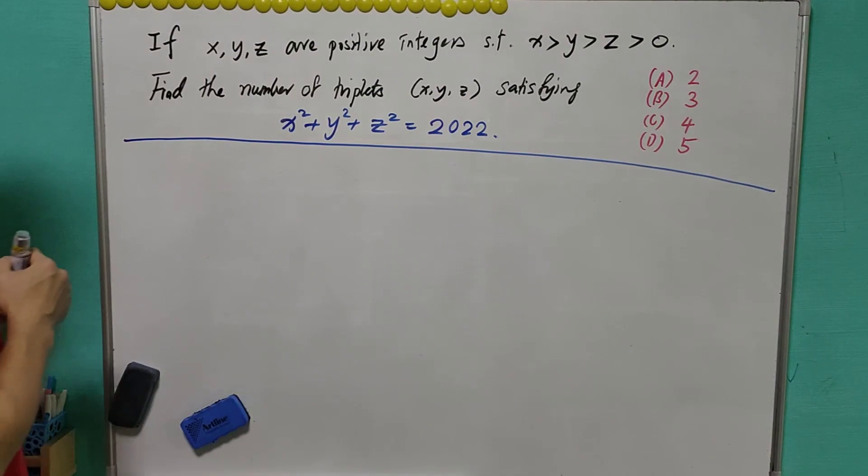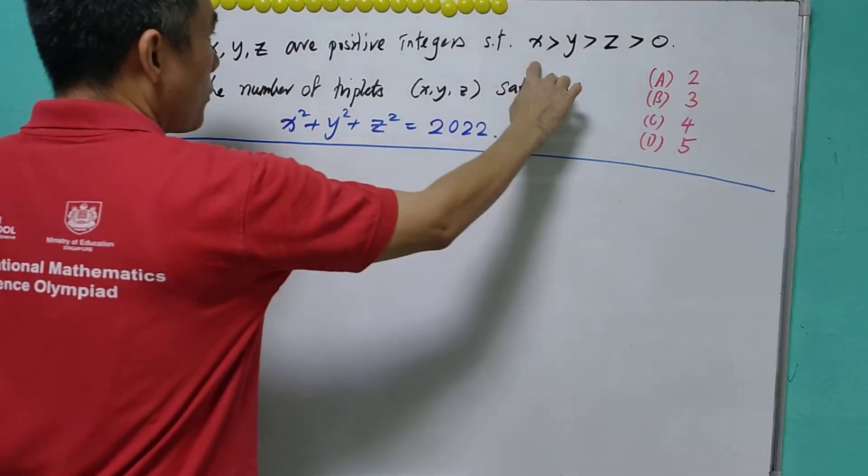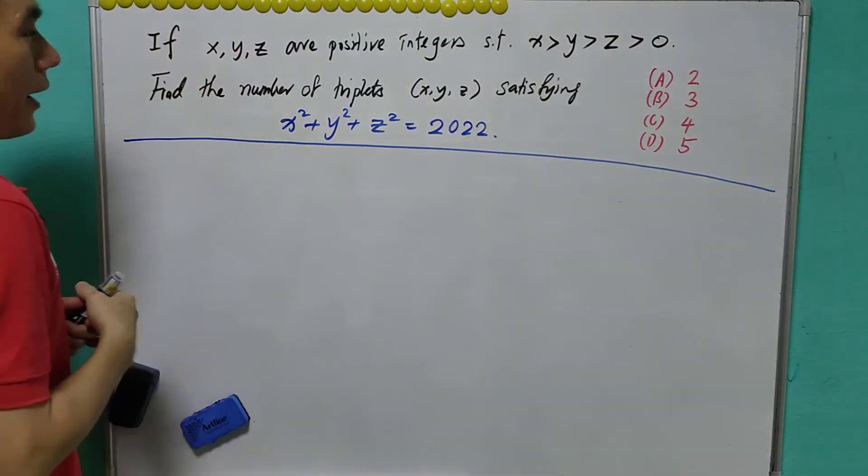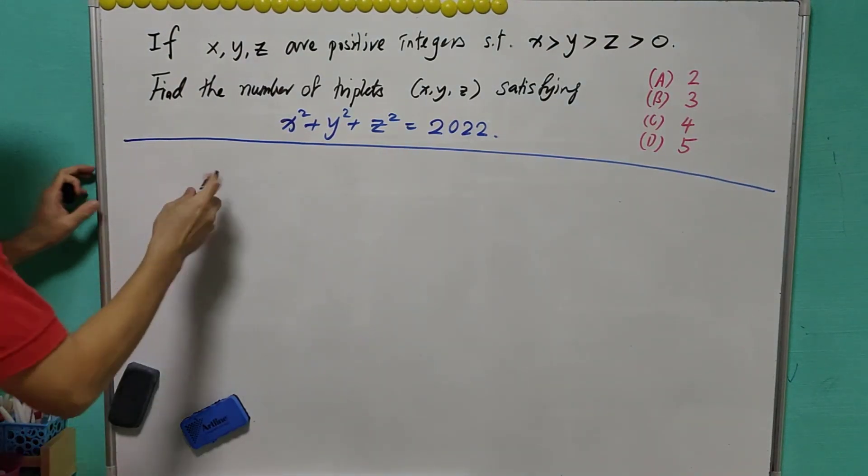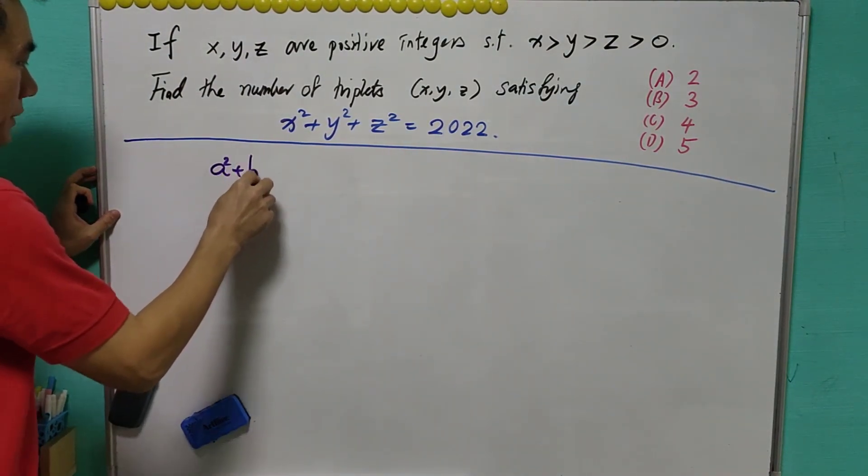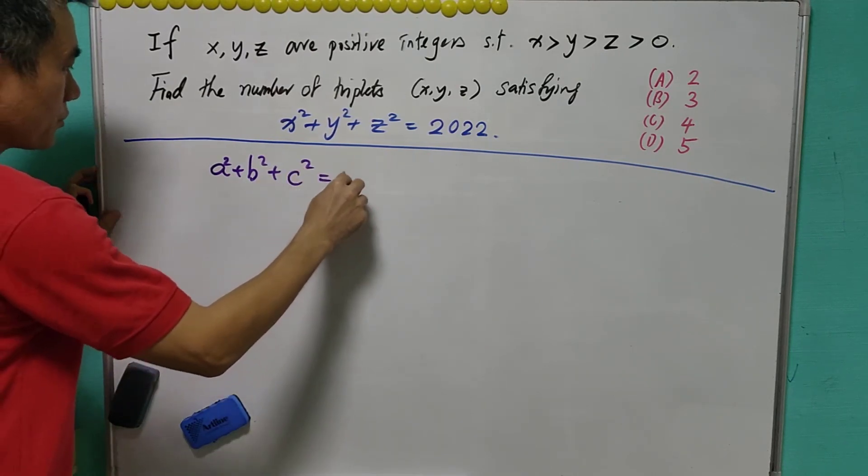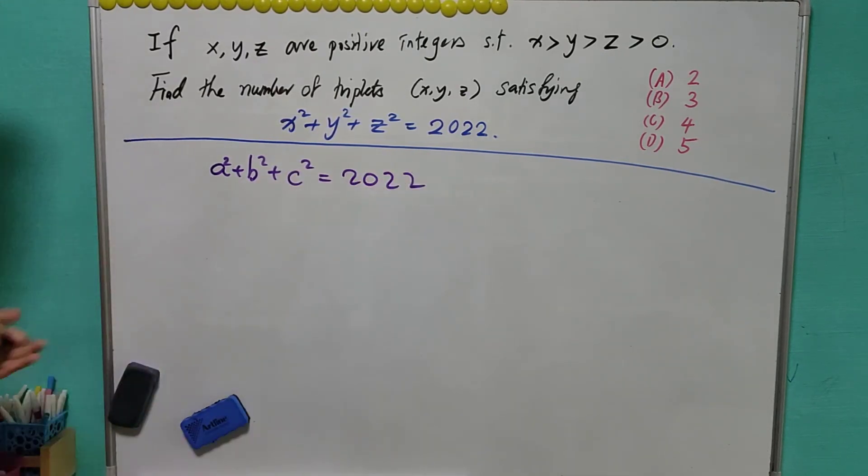First of all, I changed this question a little bit because I do not want to be distracted by x is being the greatest and y is the smallest. I write it as a square plus b square plus c square equals to 2022 where a, b, c are still integers.